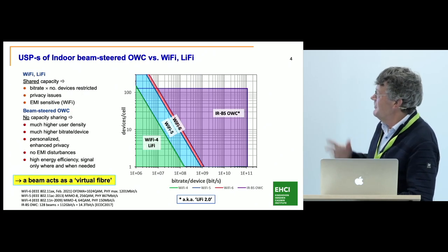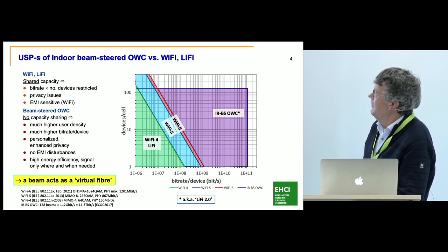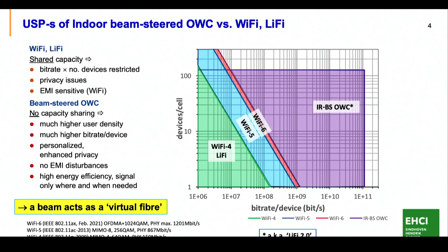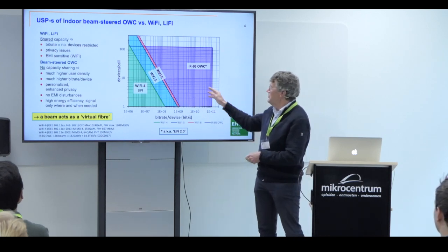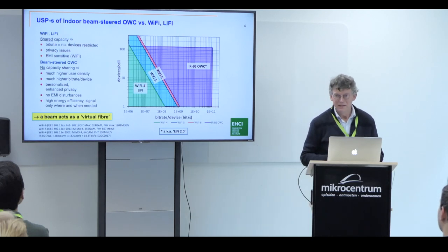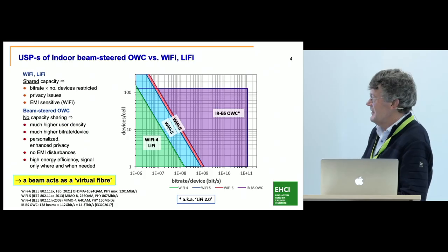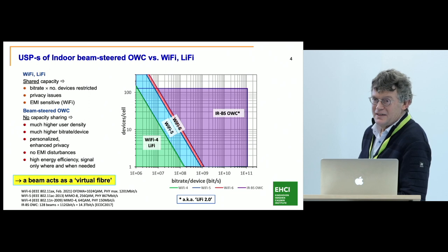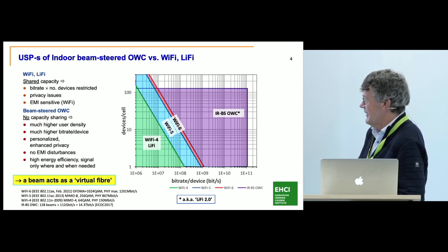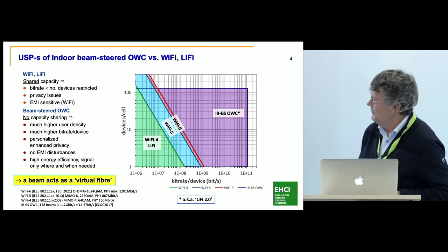Within that concept, you may ask what does it bring with respect to other technologies like Wi-Fi and Li-Fi? The basic effect is that with this concept we don't share capacity — each user gets its own beam. Because you don't share capacity, you don't hit these capacity borders when you plot devices per cell versus bitrate per device. When you use individual beams, the capacity per single beam is what a user gets. By introducing multiple beams you can increase capacity to quite high numbers. We reached in the past 112 gigabit per second per beam, realizing 80 beams, offering close to a terabit per second. The beam acts as a virtual fiber with all the other advantages.